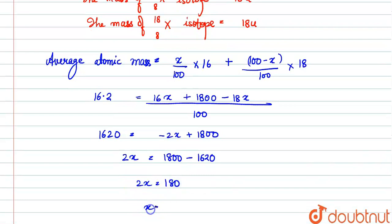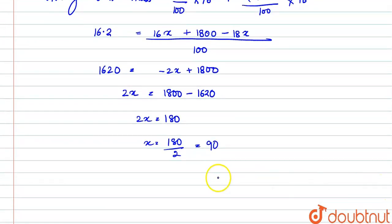180. And the value of x will be 180 upon 2, that is 90. Okay, so x value is 90, meaning x represents what amount? 90 percent. So what was our x?